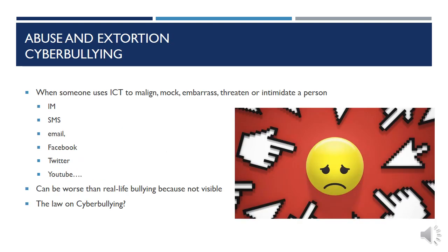Another form of abuse is cyberbullying, where the internet is used to malign, mock, embarrass, threaten, or intimidate a person. It can be done through instant messaging, WhatsApp, SMS, email, Facebook, Twitter, YouTube, and other social networking sites. It can be worse than real-life bullying because it's not visible in the outside world, yet the written message stays and cannot be erased. The person is also very difficult to track down, often hiding behind a pseudonym. There are laws against cyberbullying, but these are evolving all the time.